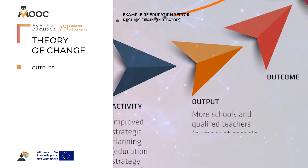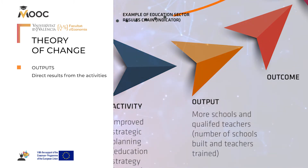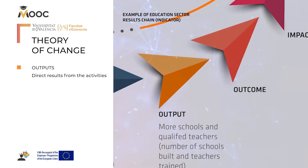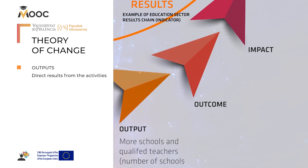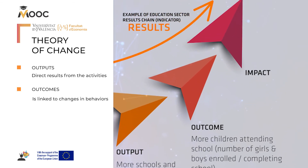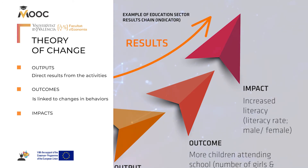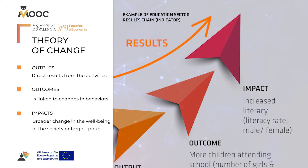The concept of outputs refers to the direct results from the activities, such as goods, services provided and infrastructures. The concept of outcomes is linked to changes in behaviors, and the concept of impacts should be associated to a broader change in the well-being of the society or target group.